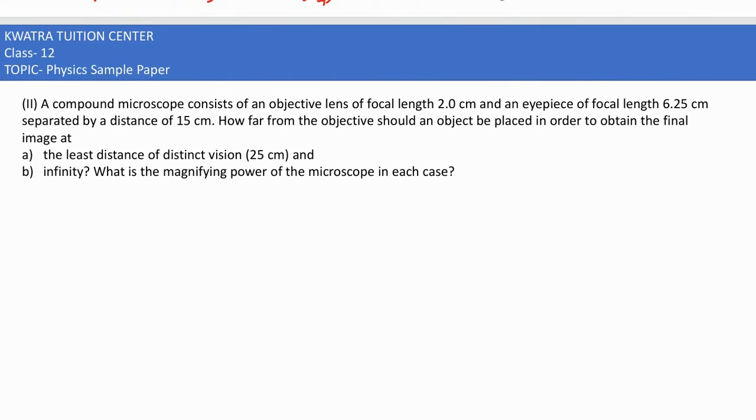For the infinity case, v₀ equals 15 minus the focal length of the eyepiece, giving 8.75 cm. Then we need to find u₀ in this case.